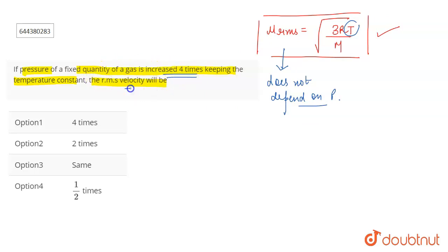Nothing will happen because the root mean square velocity does not even depend on pressure. It does not even vary with pressure. So even if you make the pressure eight times, ten times...